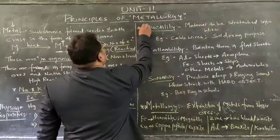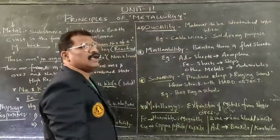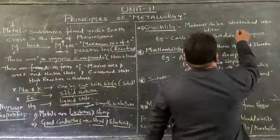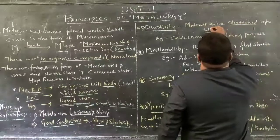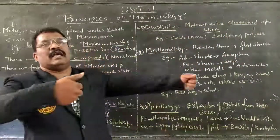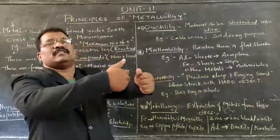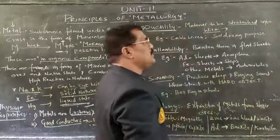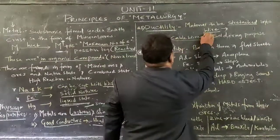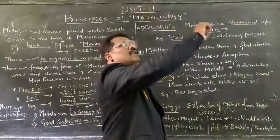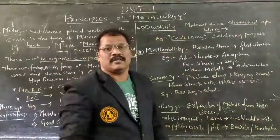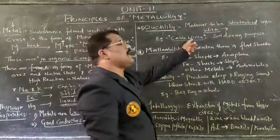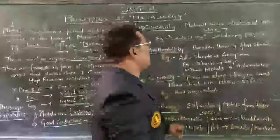The third property: a metal can be stretched in the form of a wire. This property is called ductility. For example, copper wires used to supply electricity exist in the form of cable wires and are useful for various appliance systems.